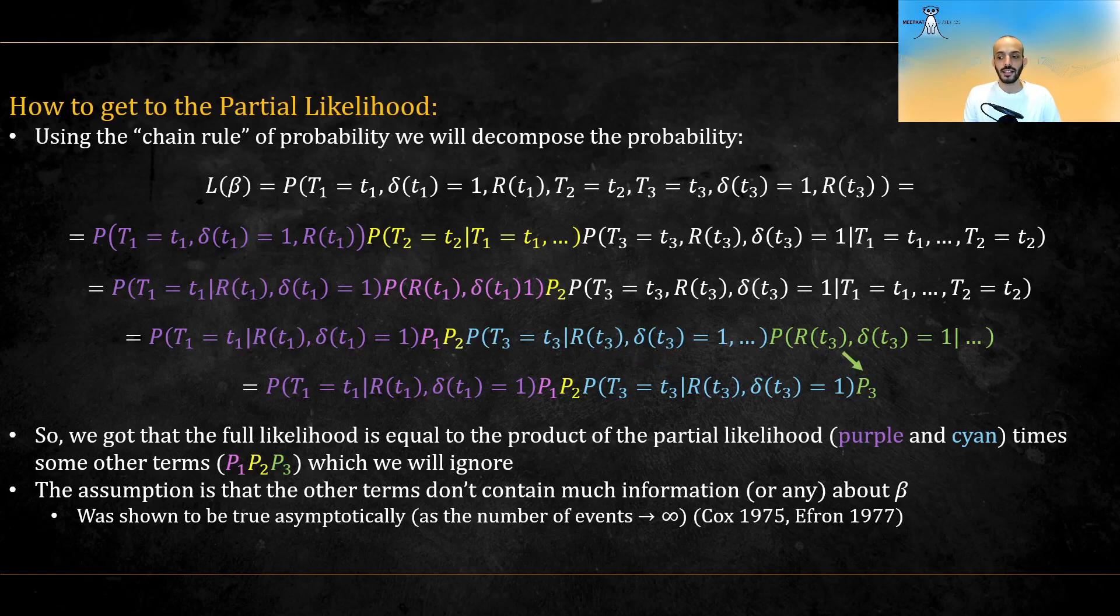So we got that the full likelihood is equal to the product of the partial likelihood in purple and cyan times the other terms p1, p2, and p3, which we will ignore.